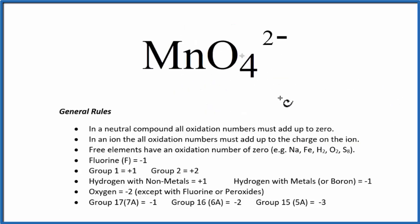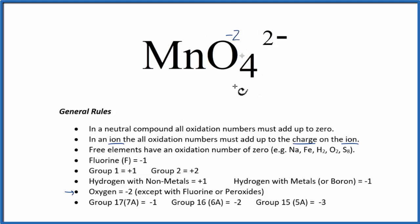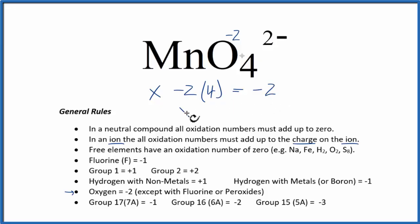MnO4²⁻ is another ion. In ions, all the oxidation numbers add up to the charge on the ion. Going down the list, we don't see Mn — it's a transition metal — but we do know oxygen has a minus two oxidation number. Setting up the equation: x minus two times four oxygen atoms equals minus two. Solving gives x equals positive six, so the oxidation number on the Mn is plus six.